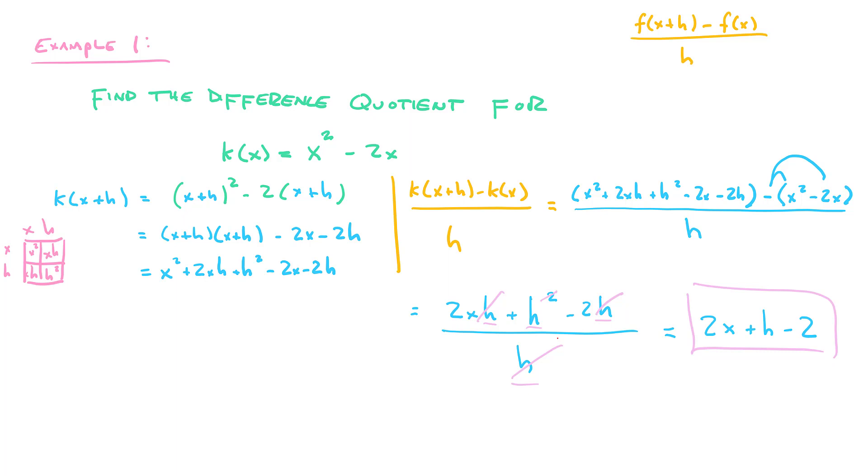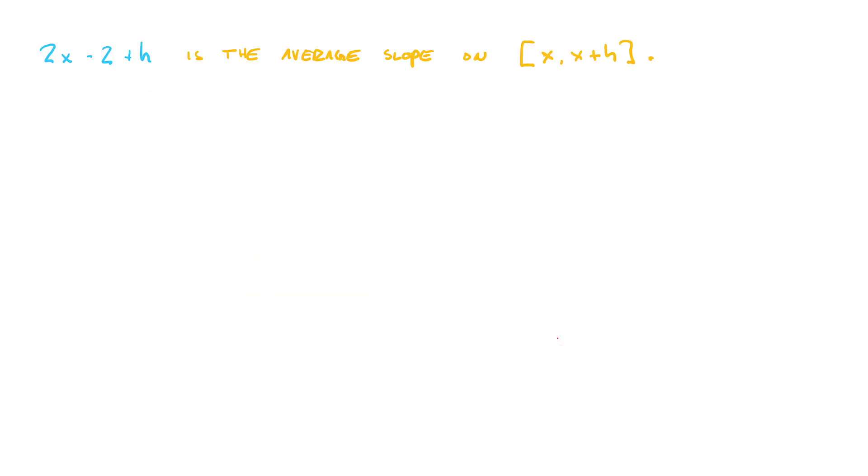Now you might be wondering, and I think that it's a good idea to always think about what the heck did we just do? What is this thing? What is 2x plus h minus 2? It's the average rate of change on an unspecified interval. 2x minus 2 plus h, and I put it in a different order here because I like to put the h at the end, is the average slope on x to x plus h. That's what it is. So what is the point of knowing this? I mean, this doesn't really help us unless we know x and h. But that's exactly the reason why this is useful.